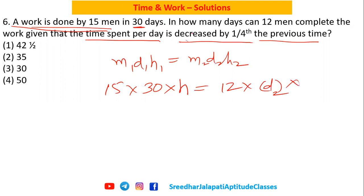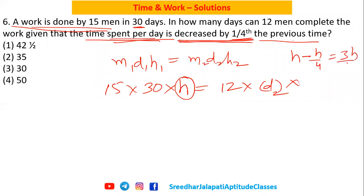Though we do not know how many hours per day they work, it is given that the time spent per day is decreased by one-fourth of the previous time. Since in the previous case we assumed they work h hours per day, now they are working one-fourth less than that. So h minus h/4, which is 3h/4. Therefore h2 = 3h/4.